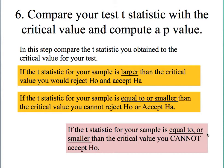If the t-statistic for your sample is equal or smaller than the critical value, you cannot reject the null hypothesis, and you cannot accept the alternative. Also — and this is very important — when you cannot reject the null, you cannot accept it either.